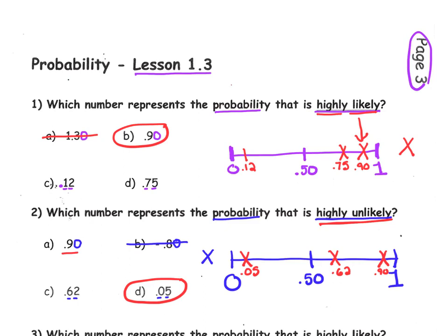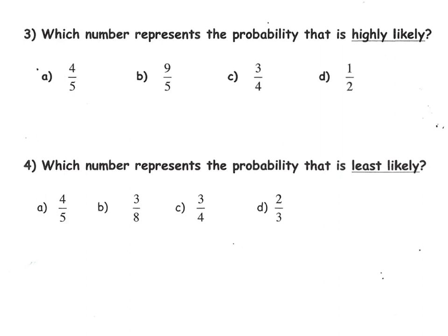Let's move on to number 3. Number 3 states, Which number represents the probability that is highly likely? Well, we've been given four different fractions. And each of these fractions have different denominators, which makes it very difficult to compare them. So let's grab a calculator and convert each of these into their decimal equivalent. Let's divide. Choice A, grab a calculator, punch in 4, divided by 5.